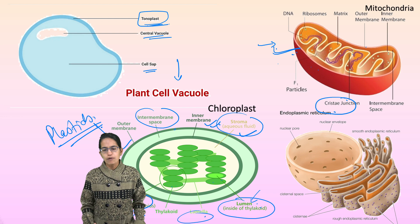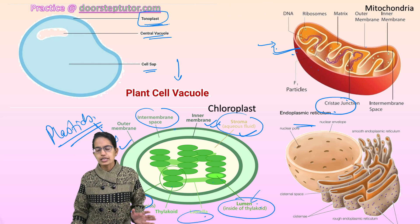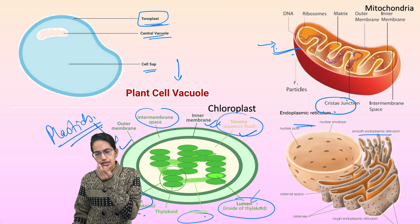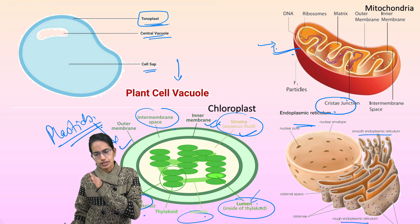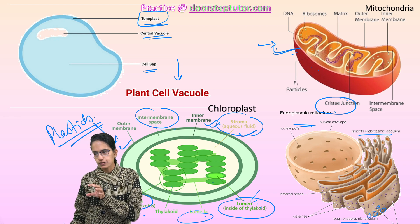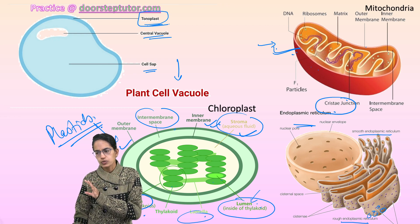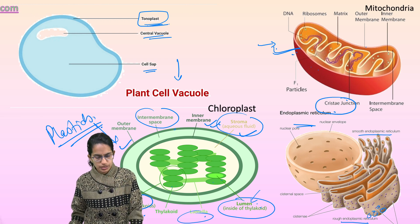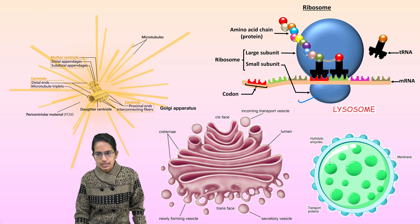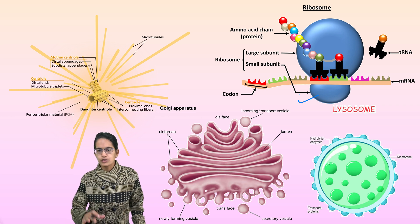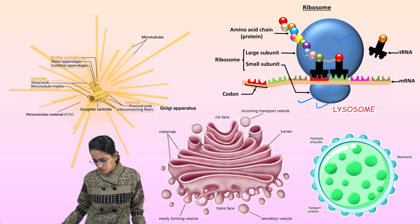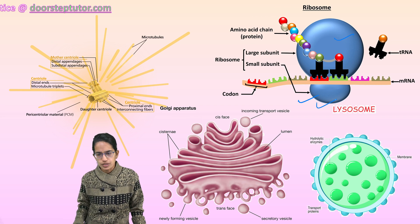The next is endoplasmic reticulum — a network of membranes connecting the plasma membrane to the nuclear membrane. There are two types: rough endoplasmic reticulum and smooth endoplasmic reticulum. On the rough endoplasmic reticulum, we can see ribosomes lying on it, while the smooth endoplasmic reticulum is without ribosomes. Ribosomes are the site for protein synthesis. Ribosomes have two units: 70S and 80S — one is the larger unit and the other is the smaller unit. They are also called the protein factory of the cell.